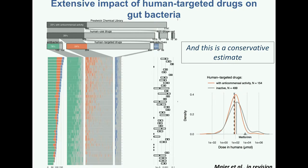Many years of work summarized in one slide. The first thing that was quite astonishing to me was that many human-targeted drugs — in this case almost 25% of them — have extensive impact on gut bacteria; they inhibit gut bacteria. Of course, antibiotics do the job as well, but this is not surprising since they're made to kill bacteria. Human drugs are actually made to target humans, yet they have quite a large impact on gut bacteria. And this is a conservative estimate because we screened at one concentration — 20 micromolar — across the board.